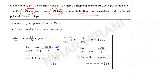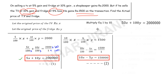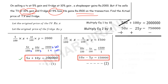My preferred method is elimination, considering the x variable. I multiply Equation 1 by the coefficient of x in Equation 2, which is 10, giving 50x plus 100y equals 200,000. Then I multiply Equation 2 by the coefficient of x in Equation 1, which is 5, to get 50x minus 25y equals 750,000. Subtracting with opposite signs, the 50x terms cancel, leaving 100y plus 25y, which is 125y, equal to 1,250,000.